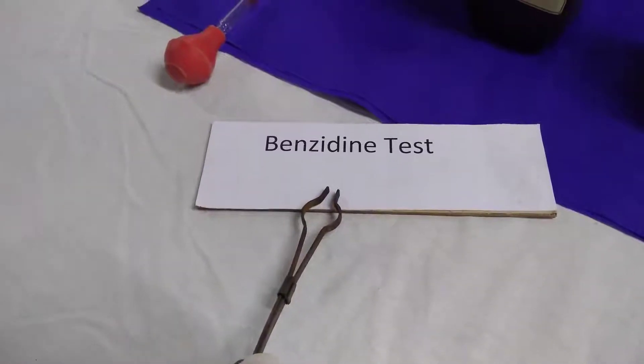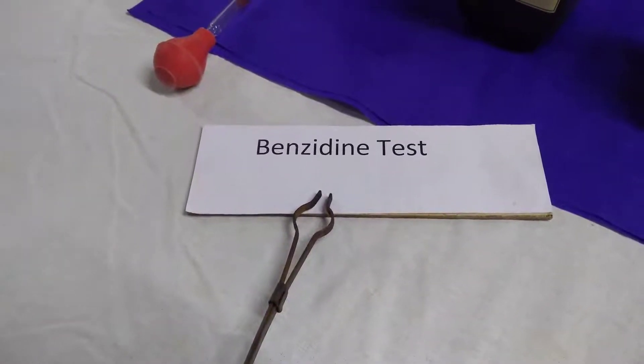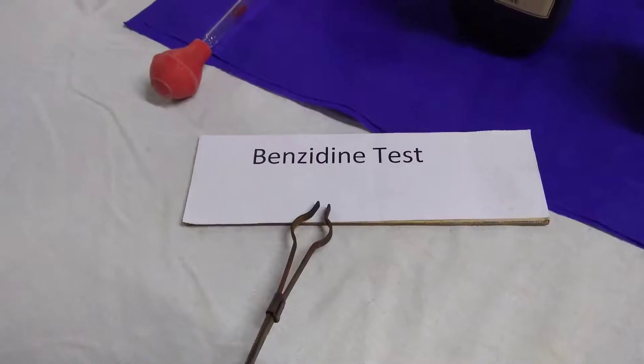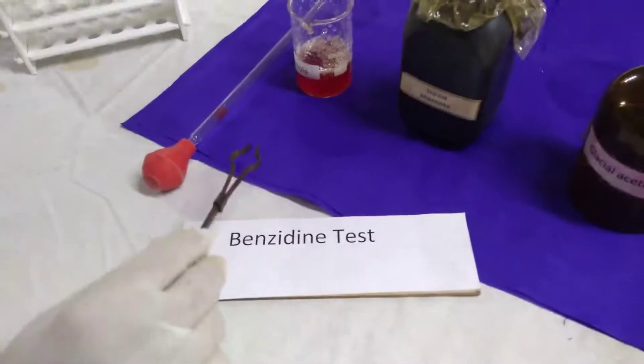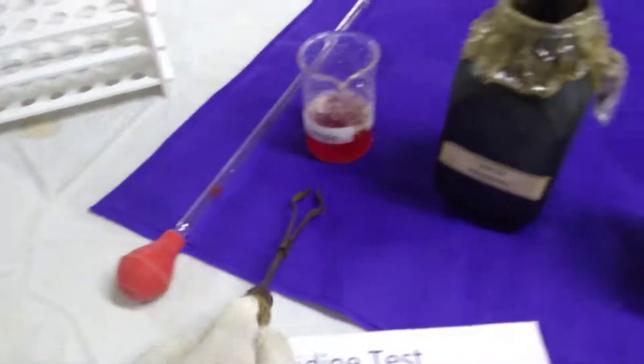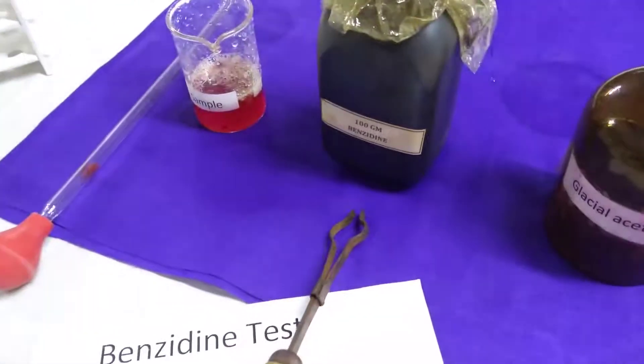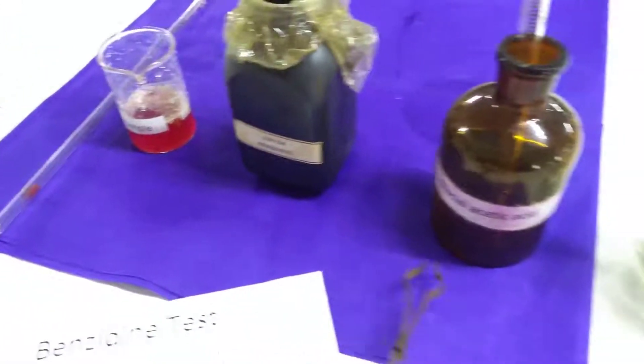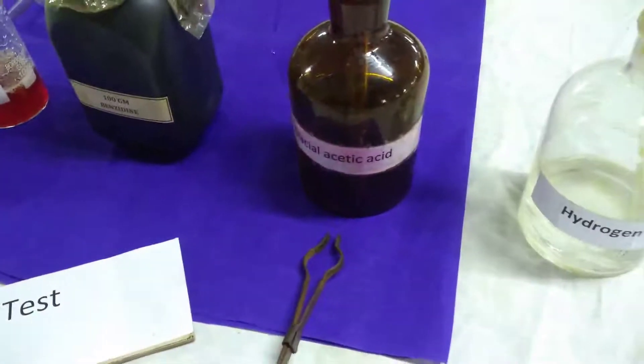Benzidine test. This test is done to identify the presence of blood in a urine sample. The reagents required are: the urine sample, benzidine powder, glacial acetic acid,